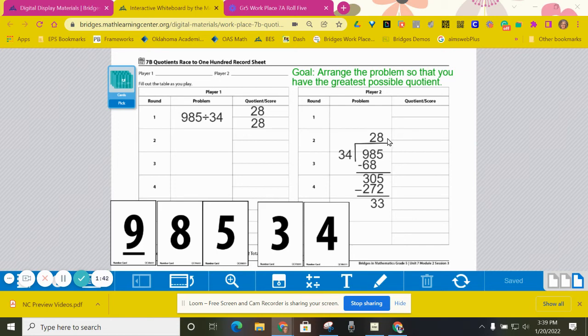Once you find your quotient, you're going to show your work to your partner. Your partner has to agree with you. If your partner does not agree with you, then both of you will work it again in your student journals and make sure that you do have the correct quotient.